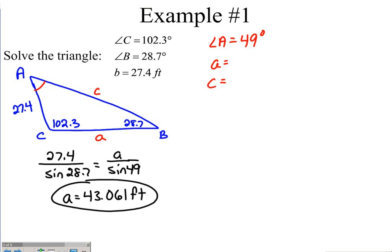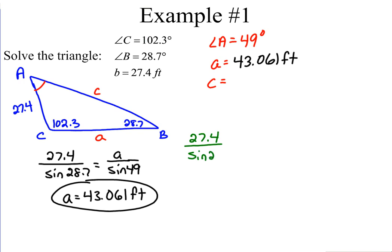Now find side C. If possible, do not use rounded measures — we just found side A as a rounded value, so we'll use the original given ratio to avoid magnifying rounding error. That gives us 27.4 over sine of 28.7 equals C over sine of 102.3. Multiply by sine 102.3 and divide by sine 28.7, and side C equals 55.747 feet.